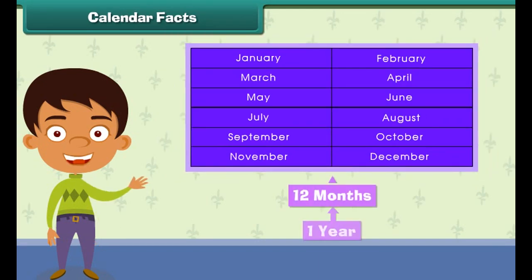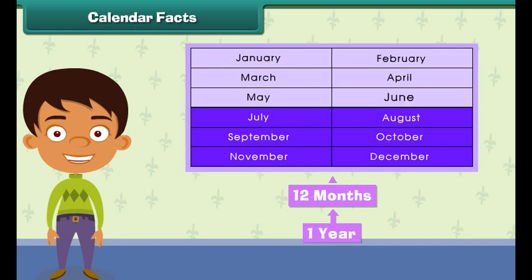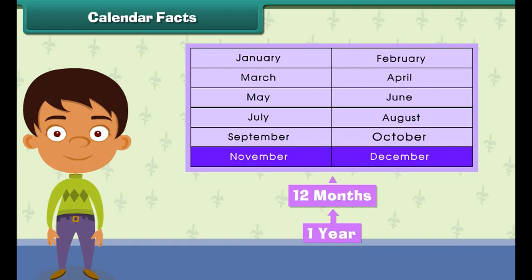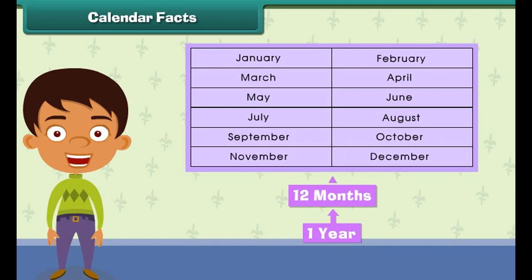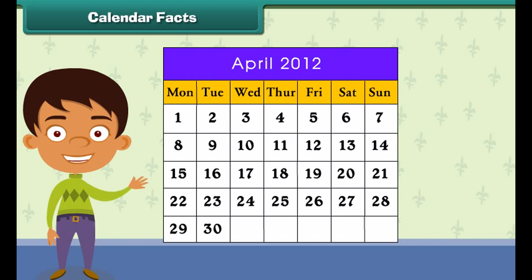Calendar facts. There are 12 months in a year. Months are January, February, March, April, May, June, July, August, September, October, November and December. When all the days are counted in a year, it sums up to be 365 days.